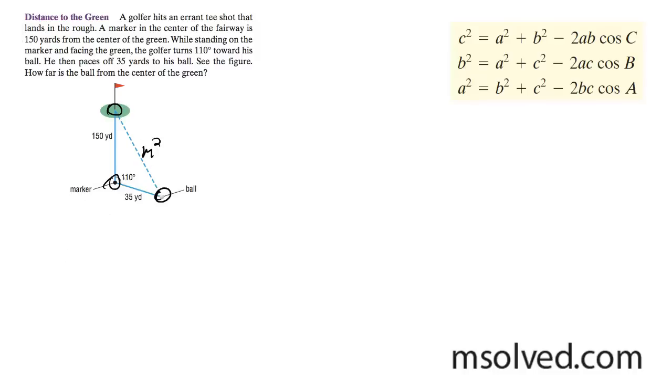And just like, this is angle m, the marker. So m squared is equal to 150 squared plus 35 squared minus 2 times 35 times 150 times the cosine of 110 degrees.